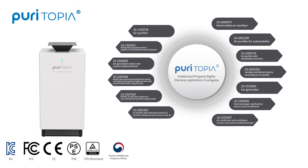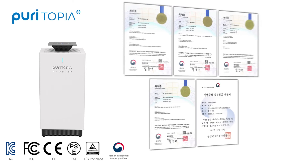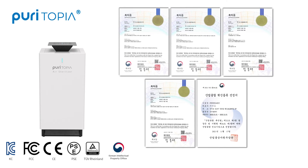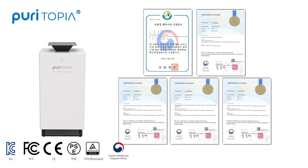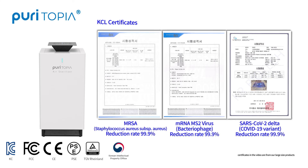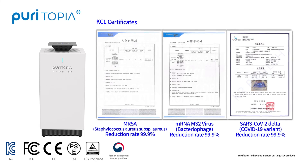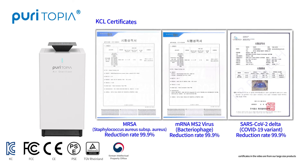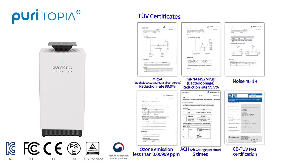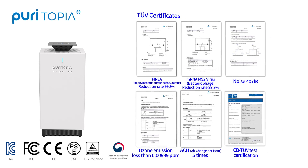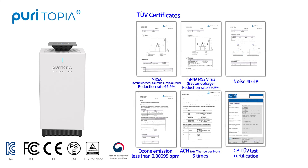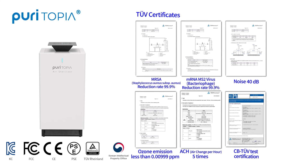Puritopia has certifications from major countries, including TUV and CE certifications, and holds 13 technology patents. Puritopia has proven 99.9% sterilization power through numerous tests — including bacteria, viruses, and COVID-19 Delta variant — at TUV Rheinland, a global testing and certification agency, and KCL, a domestic accredited certification agency.